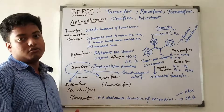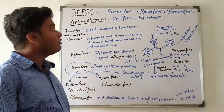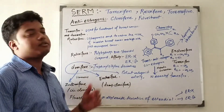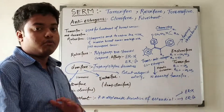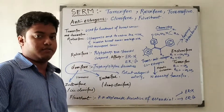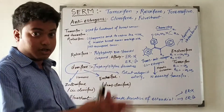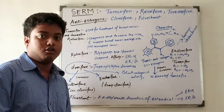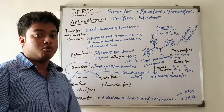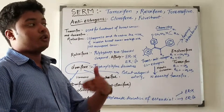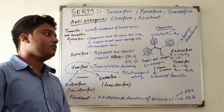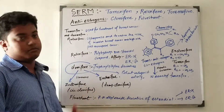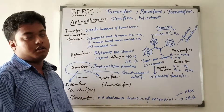Selective estrogen receptor modulators — we are discussing modulators. Because of that, tamoxifen, raloxifene, and toremifene are these compounds. They are not always antagonists. We studied in the previous lecture the mechanism behind how they act on the estrogen receptor as antagonists by activating different co-repressors and co-activators. Here we will study about selective estrogen receptor modulators.